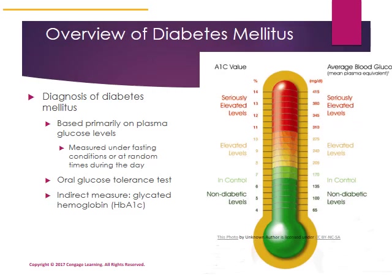Diabetes is diagnosed based on plasma glucose level testing. Glucose levels can be measured under fasting conditions or at random times during the day — a casual blood glucose test. An oral glucose tolerance test can also be used to diagnose diabetes. There is also an indirect measure called glycated hemoglobin, or HbA1c, which gives a percentage of hemoglobin that is attached to a glucose molecule. The longer your blood sugar stays elevated, the higher your HbA1c percent.